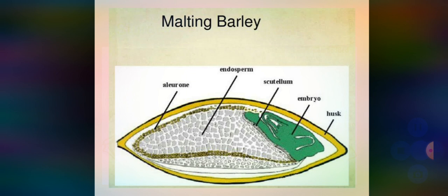Endosperm cells are packed with starch embedded in a protein matrix. Barley starch has both lenticular granules and small spherical granules, as seen in the figure. Generally, the embryo part is about 2–5% on a dry basis. The husk or pericarp is 7–15%, the testa contributes 1–3%, and the starchy endosperm is about 75%.